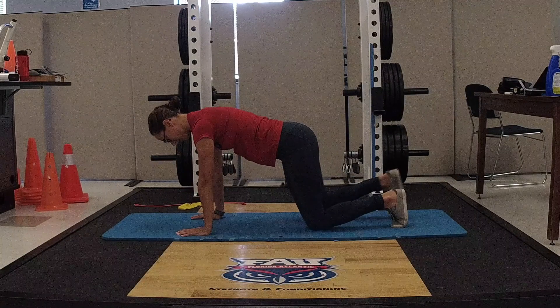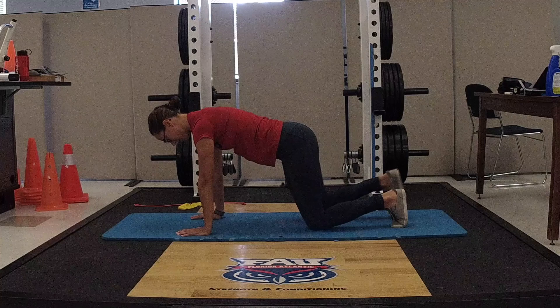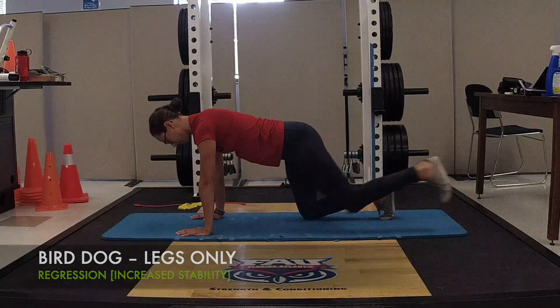To regress this exercise, we can make it more stable by increasing the points of contact. So instead of going from four points of contact to two, we can go from four to three by performing the bird dog with either legs only or arms only.